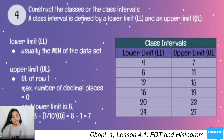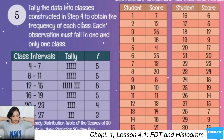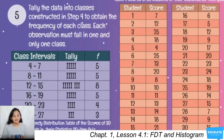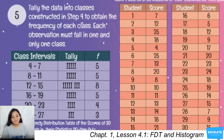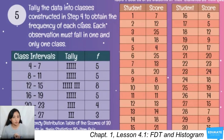Step 5 is to tally the data into the classes constructed in step 4 to obtain the frequency of each class. Each observation must fall in one and only one class. Place a tally mark in the appropriate class interval row, then count the tallies and record them in the frequency column. The class intervals are: 4–7, 8–11, 12–15, 16–19, 20–23, and 24–27.